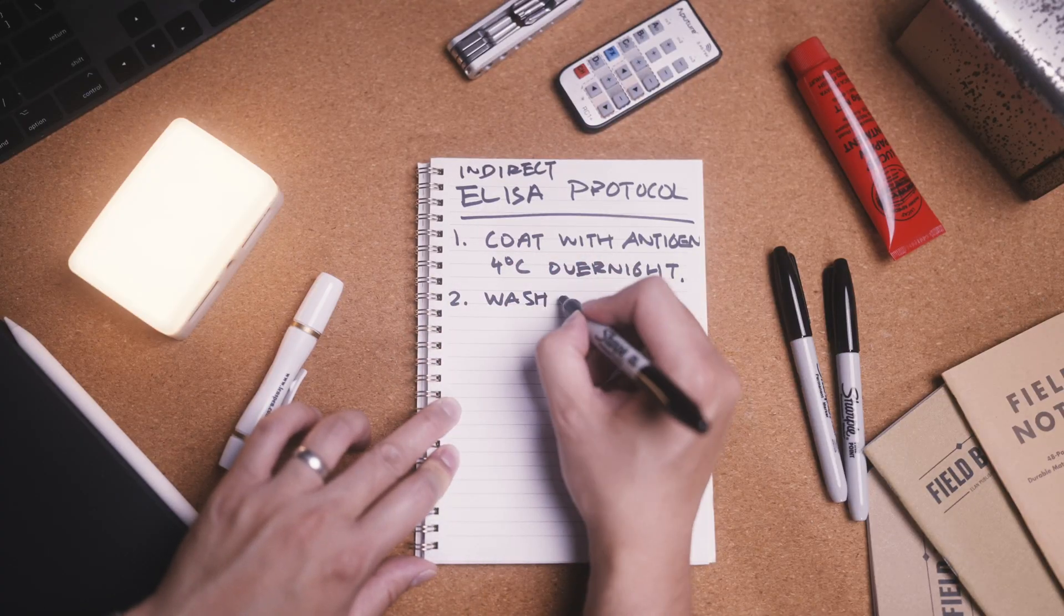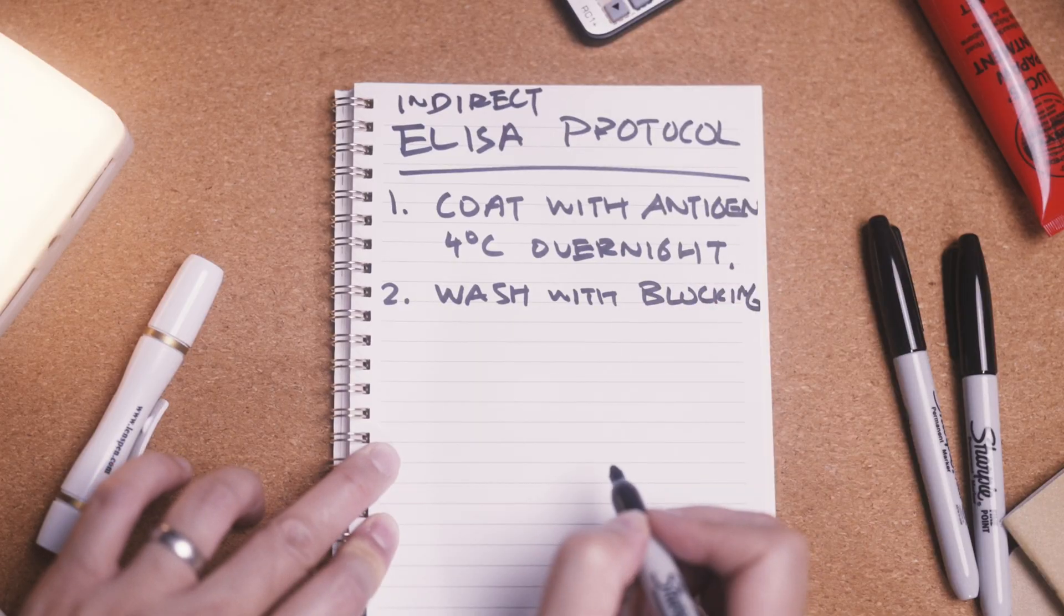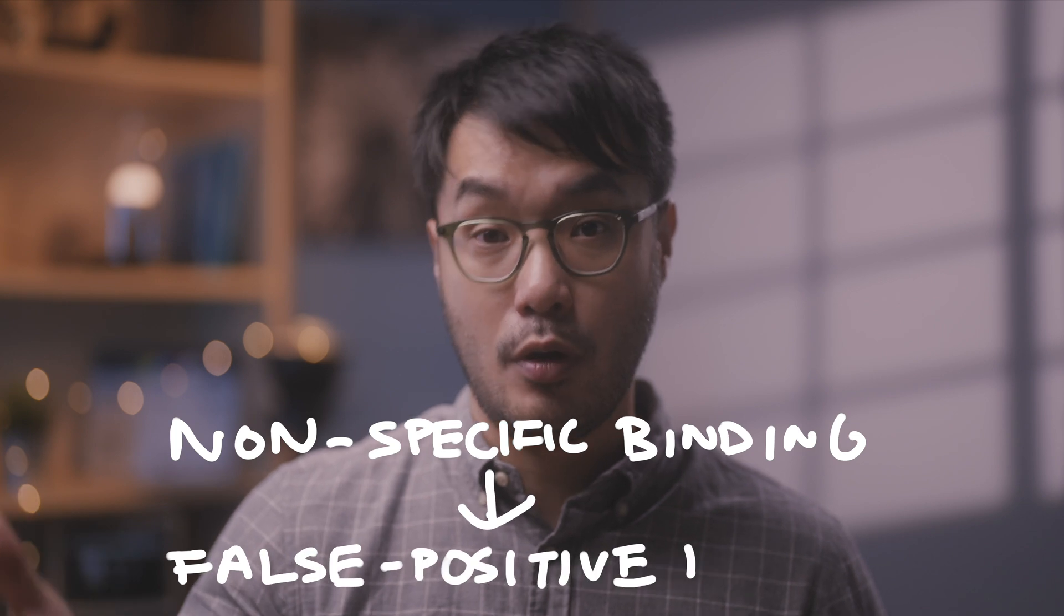The second stage involves adding a blocking buffer to the wells. Some antigens are inherently sticky and will bind non-specifically leading to false positive results. The blocking buffer neutralizes these sticky regions so that any binding that occurs is specific.